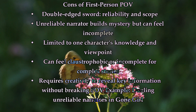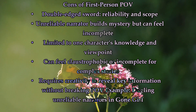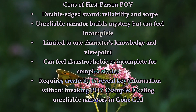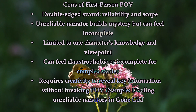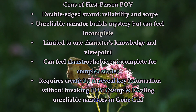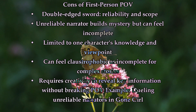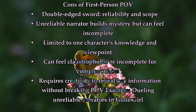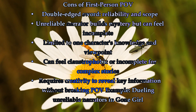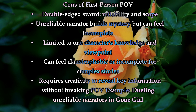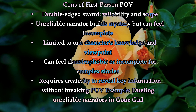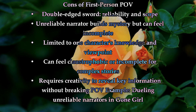But first-person is a double-edged sword in terms of reliability and scope. Having an unreliable narrator who may be lying, misremembering, or simply not privy to the full picture can be a fantastic tool for building mystery and suspense, and encouraging readers to read between the lines. Gone Girl uses this to pitch-perfect effect with dueling first-person narrators who keep us constantly guessing about what's true and what's fabrication. On the other hand, being limited to one character's knowledge and viewpoint can sometimes feel claustrophobic or incomplete, especially if your story has a lot of moving parts or subplots that your narrator wouldn't realistically be aware of. As a writer, you have to get creative about how to reveal key information and events without breaking POV.